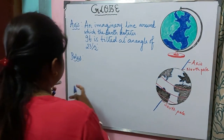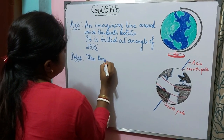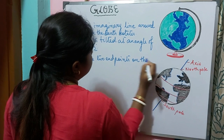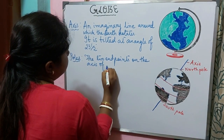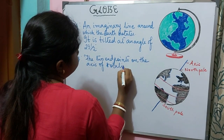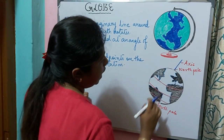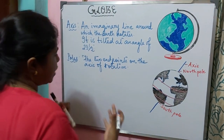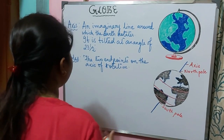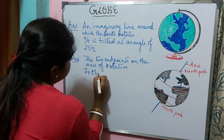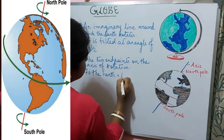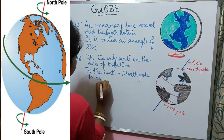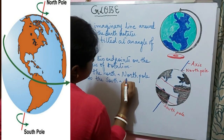So what are poles? The two end points on the axis of rotation — or we can say the points where the axis is touching the surface of the Earth or the globe. To the north is the North Pole, and to the south is the South Pole.